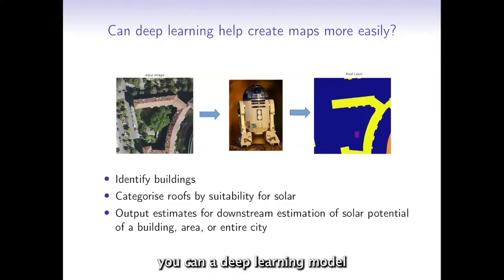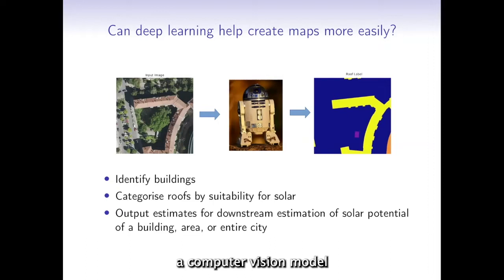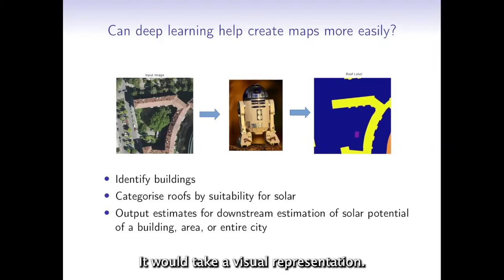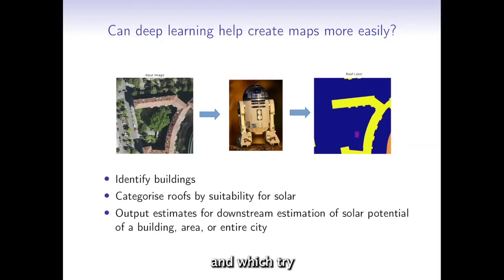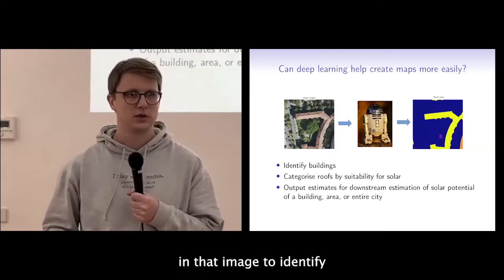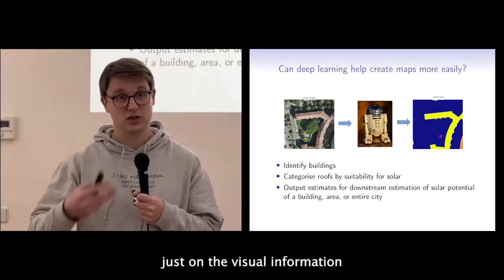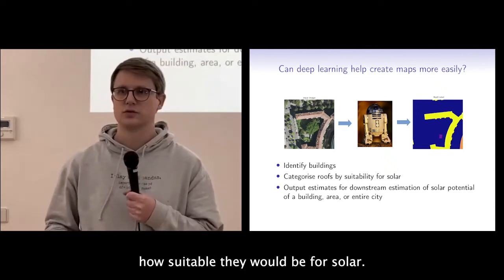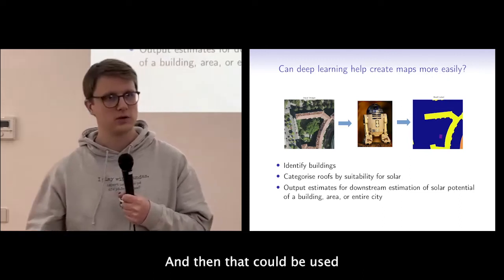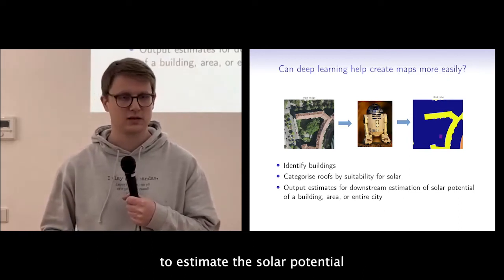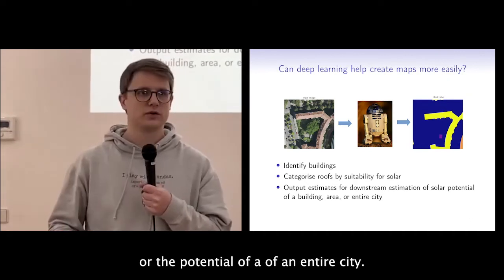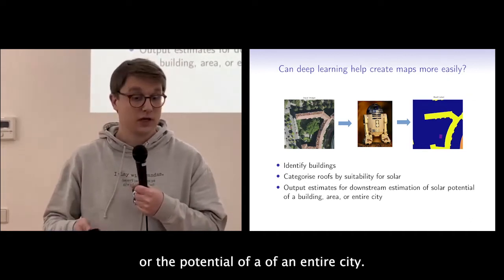Our question was: can a deep learning model — more specifically a computer vision model — do this more easily? The model would take aerial photographs and try, from that visual information, to identify where the buildings and roofs are, then classify those roofs on suitability for solar. This could then be used to estimate the solar potential of a particular building or even an entire city.